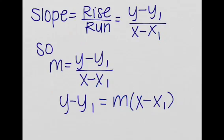Now let's see a quick proof, not like a proof, but how this point-slope formula came to be. We know that slope is equal to rise over run.